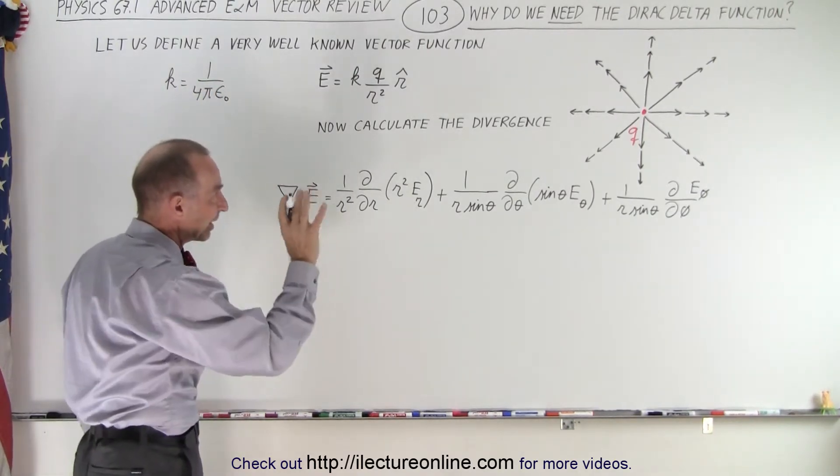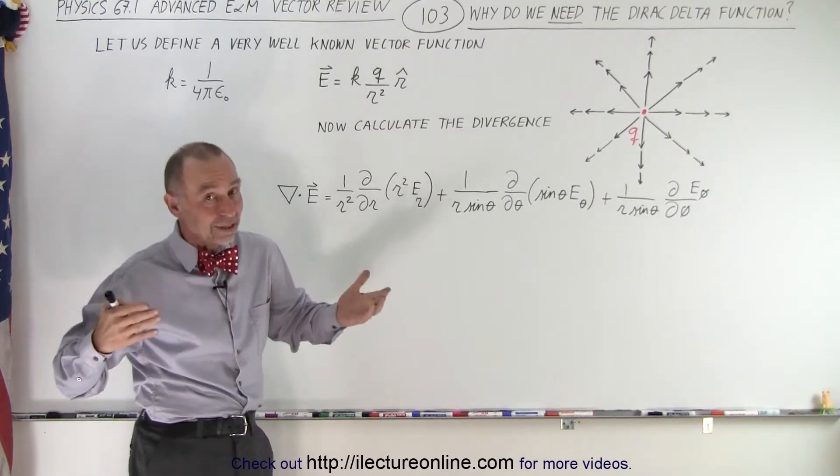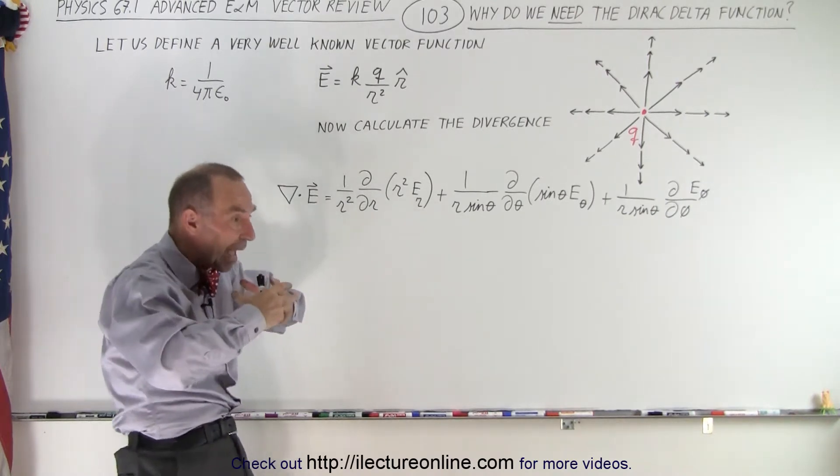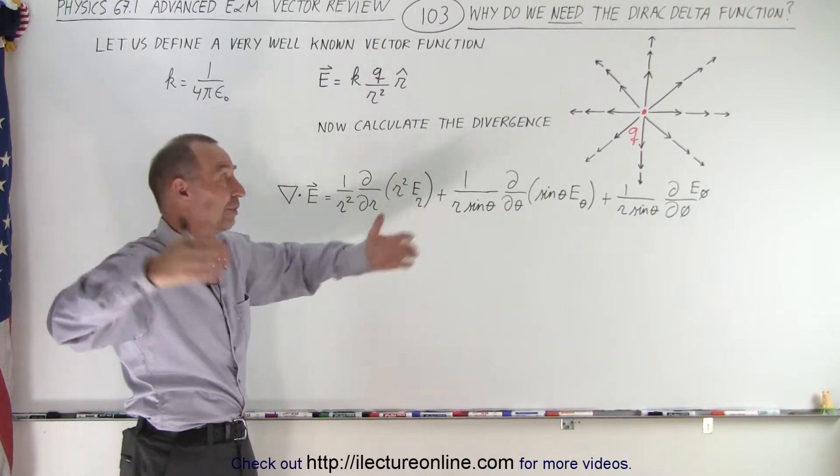Now, if we were to calculate the divergence of that, certainly you expect to see some value, because the definition of the divergence is that there's an outflow, there's a source of the field, and then an outflow of the field.